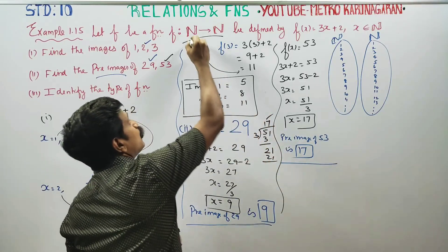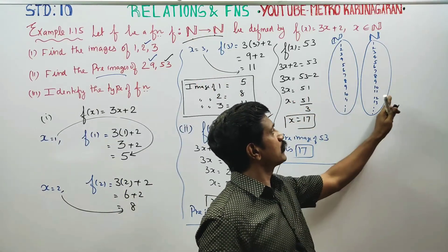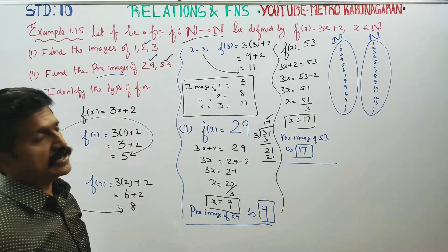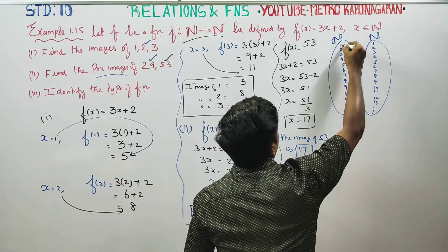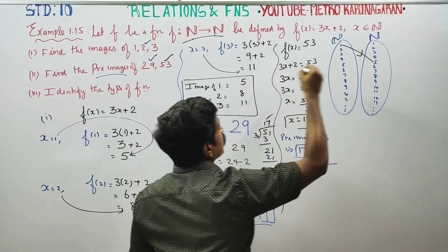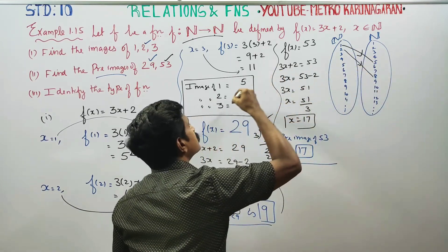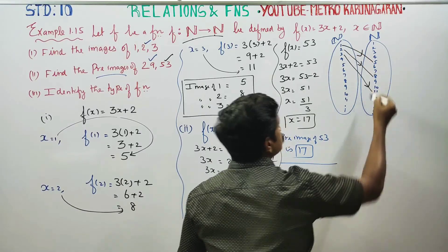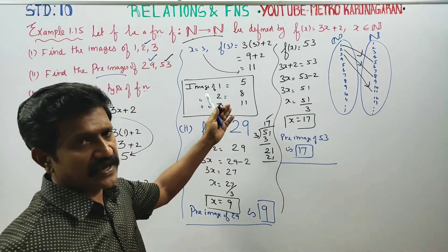This is the domain and this is the co-domain — all natural numbers. From the domain: 1 maps to 5, 2 maps to 8, 3 maps to 11. If you look at just these 3 examples from the domain mapping to their images.